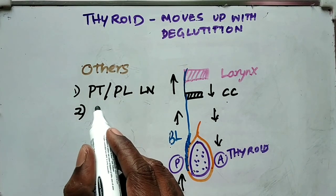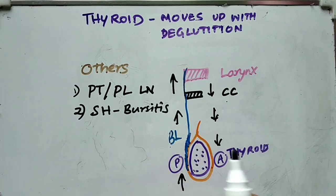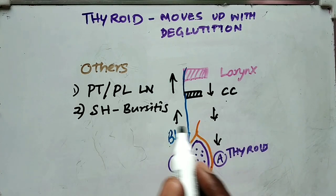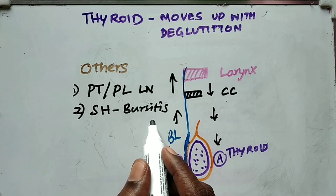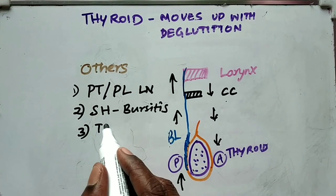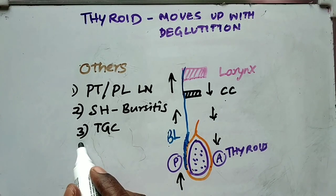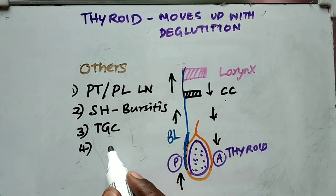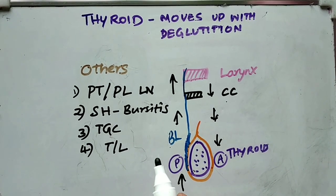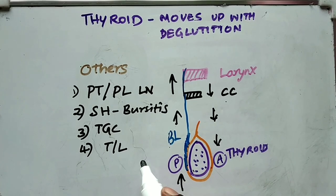Number two is subhyoid bursitis — a condition just below the hyoid bone where a bursa is present. That will produce a swelling that is also enclosed within the pretracheal fascia. Number three is the thyroglossal cyst, which is also a swelling present within the pretracheal fascia. Number four is any swelling arising from the trachea or larynx — that also moves up and down with deglutition. These are the swellings that move up and down with deglutition.